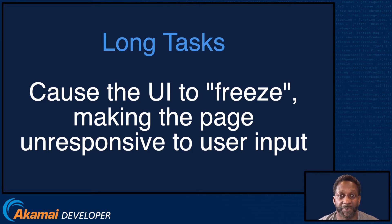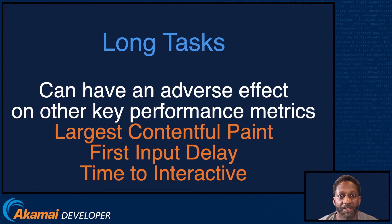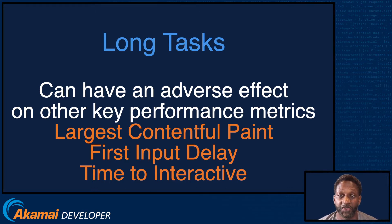Clicks and taps often don't work because event listeners and click handlers have not yet been attached. As a result, users start to notice that their clicks are delayed and that scrolling the page has become janky or unresponsive. Long tasks can have an adverse effect on other key performance metrics, including the new Core Web Vital metrics like largest contentful paint and first input delay, as well as time to interactive, which measures when the page is ready to respond to user input.